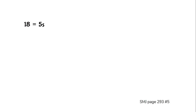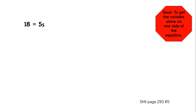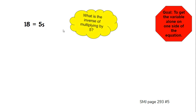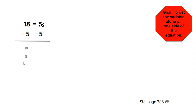Here we have 15 = 5s. Our goal is to get the variable alone on one side, so we need to get rid of this 5. This is 5 times s, so the inverse of multiplying by 5 is dividing by 5. 15 divided by 5 — well, that's 15 fifths as a fraction, which simplifies to 3. And 5s divided by 5 is just s. So s equals 3.